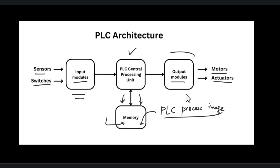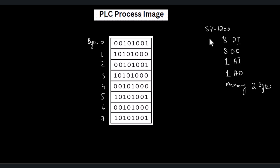So collectively in the memory we have a snapshot of input data, output data, and the PLC's internal data. That collective representation of the entire PLC data is what we call the PLC process image.